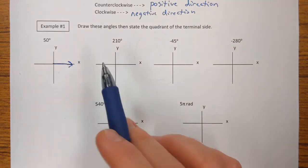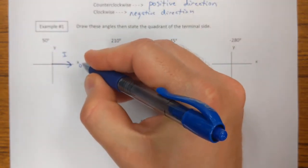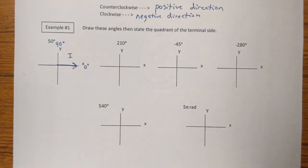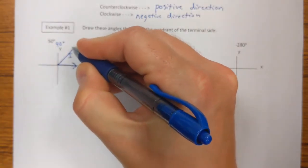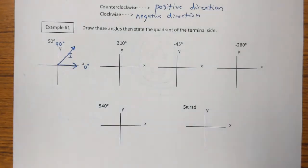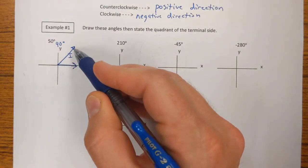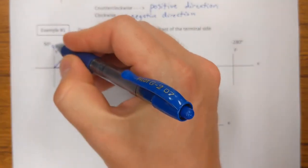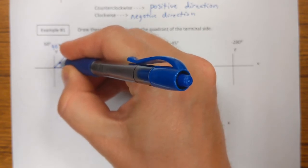I know that quadrant one goes from 0 degrees to 90 degrees, so 50 degrees is going to be roughly in the middle — a little bit closer to the 90 than to the 0. This doesn't have to be perfect; I don't expect you to get a protractor out. I'm going to draw my terminal side here in the middle of quadrant one. Since this is positive 50 degrees, I draw a directional arrow opening counterclockwise.